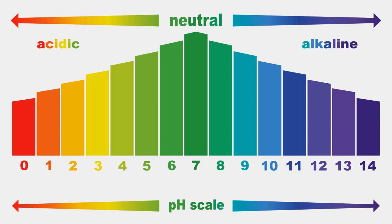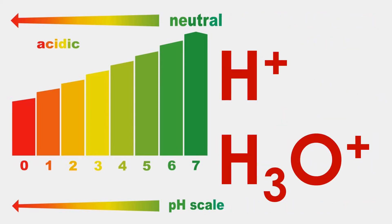pH is measured on a scale from 0 to 14. If a solution is acidic, it has an excess of hydrogen and hydronium ions, and therefore a pH less than 7.